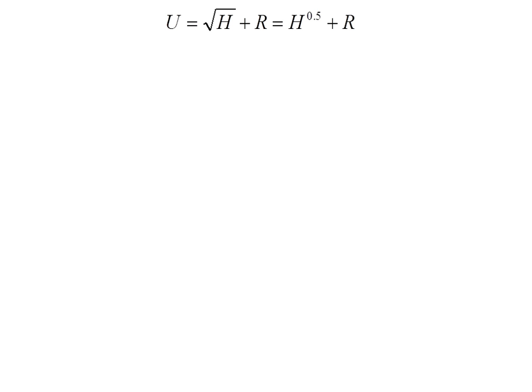Here's my utility function, and I'm rewriting it so I don't have that radical sign. So it's going to be H to the 0.5 plus R. The marginal utility of H is the partial derivative of utility with respect to H, and the marginal utility of R is the partial derivative of utility with respect to R.